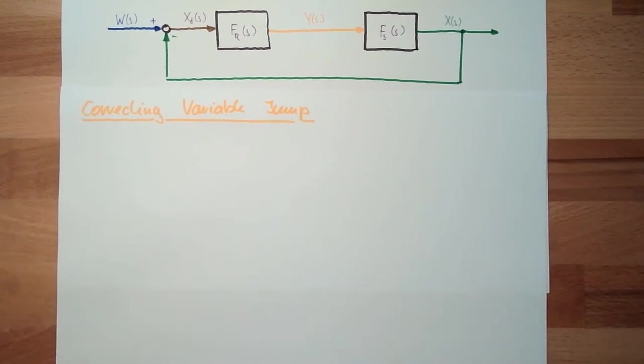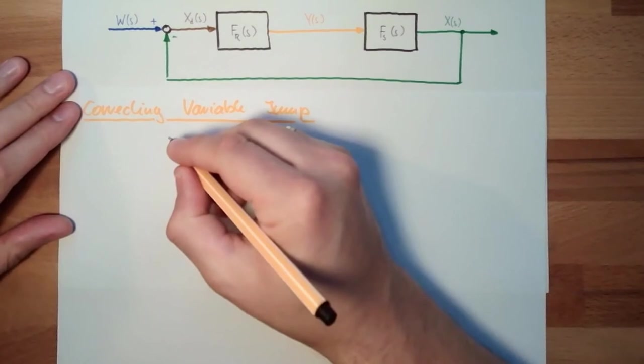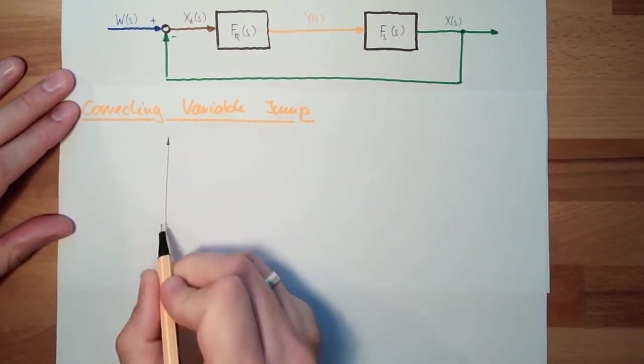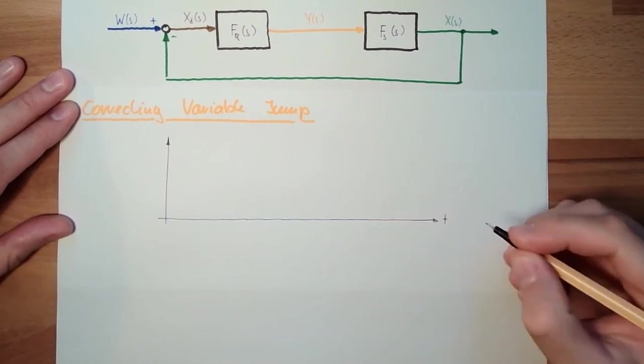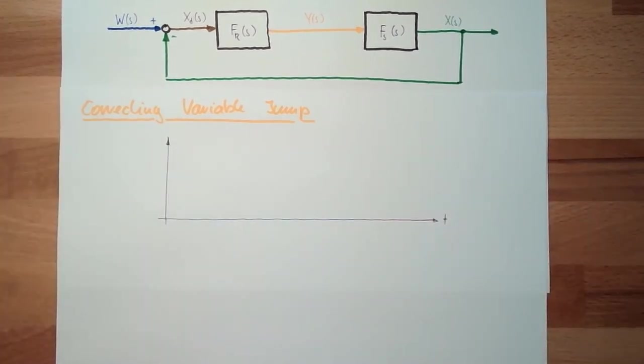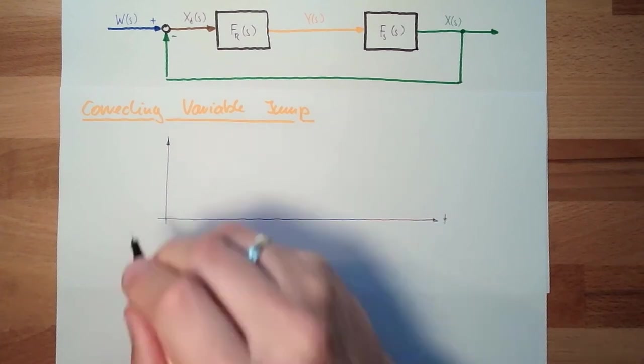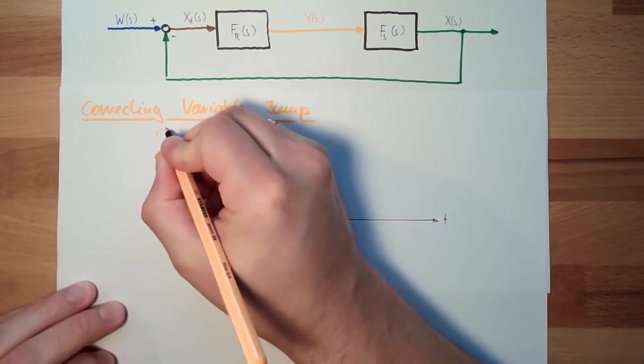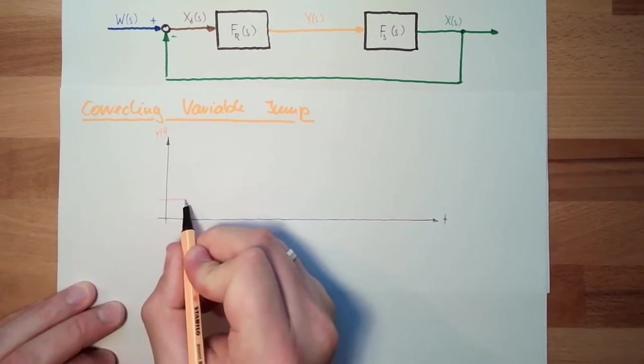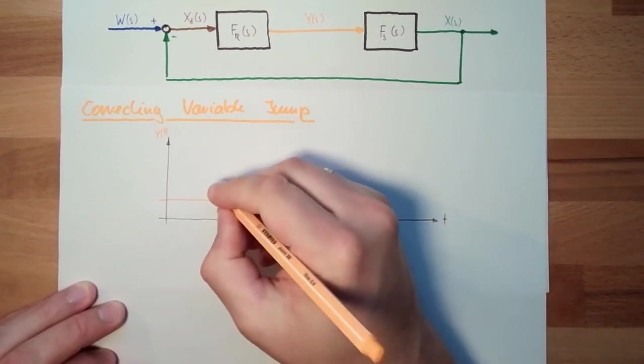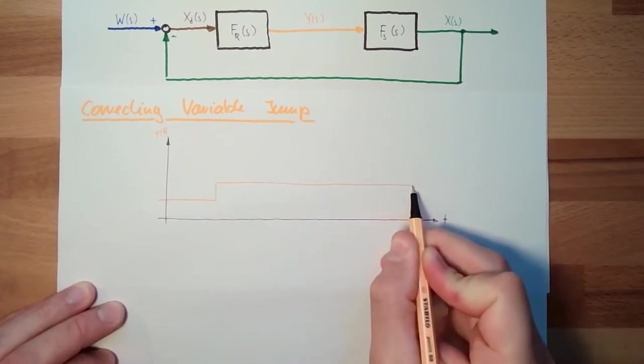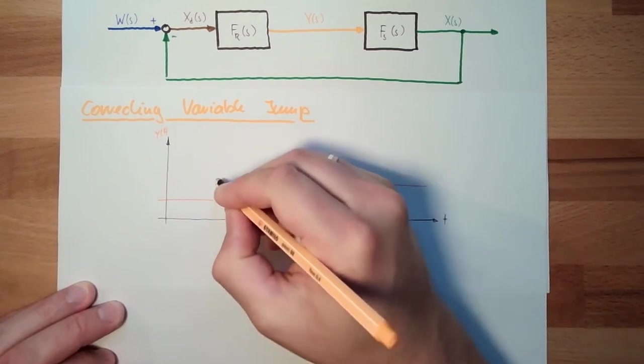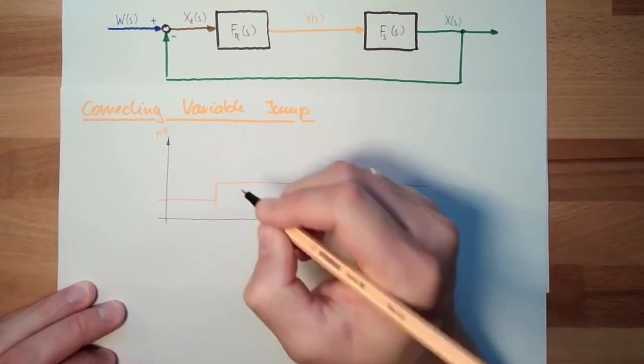Let's draw something. We have t and here we have y from t. This will be constant over a period of time and then we make a jump. It's not defined how big this jump is, but we make a jump at one point in time. And now we have a look at our regulated variable.